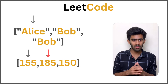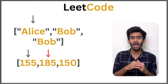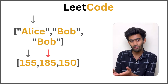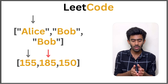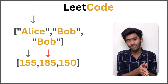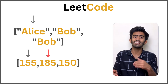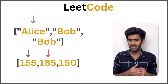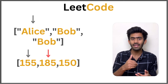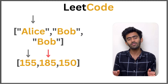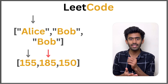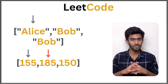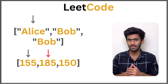In bubble sort, we check adjacent elements. If they are not in the right order — in this case descending order, meaning the first element should be the greatest — we swap them. We continue this process for all pairs of adjacent elements such that at the end we get the sorted version of the given array.